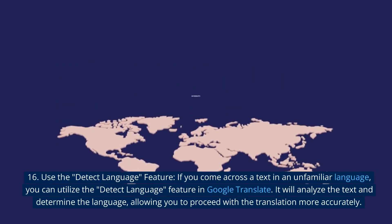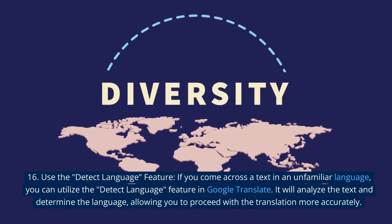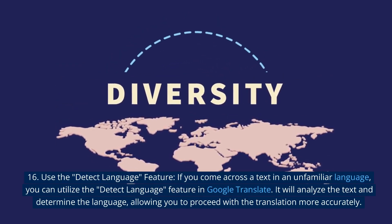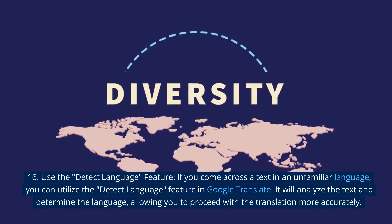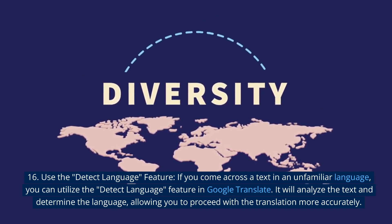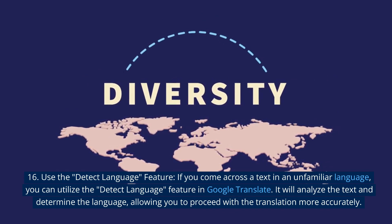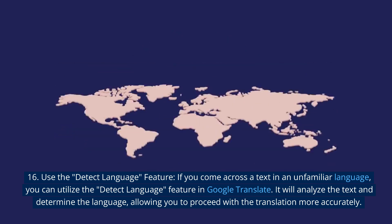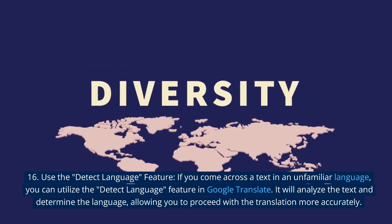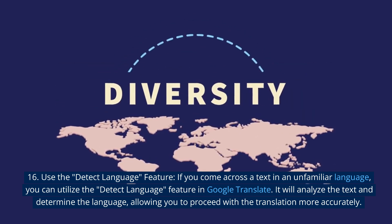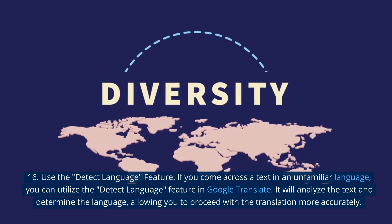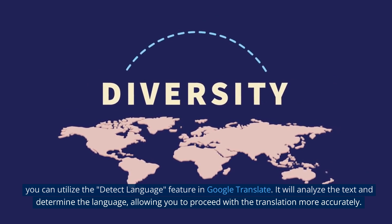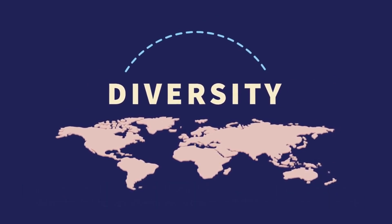16. Use the detect language feature. If you come across a text in an unfamiliar language, you can utilize the detect language feature in Google Translate. It will analyze the text and determine the language, allowing you to proceed with the translation more accurately.